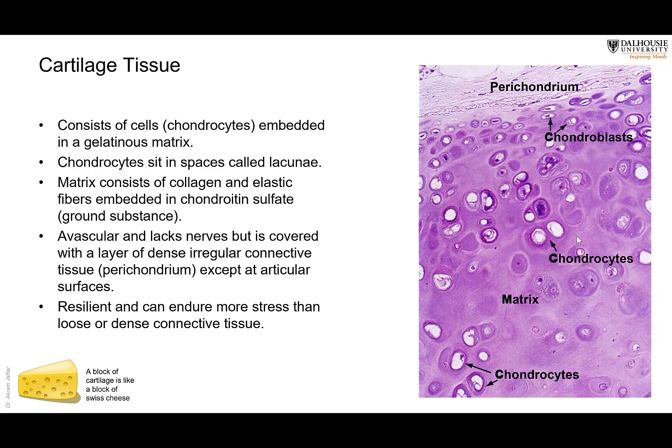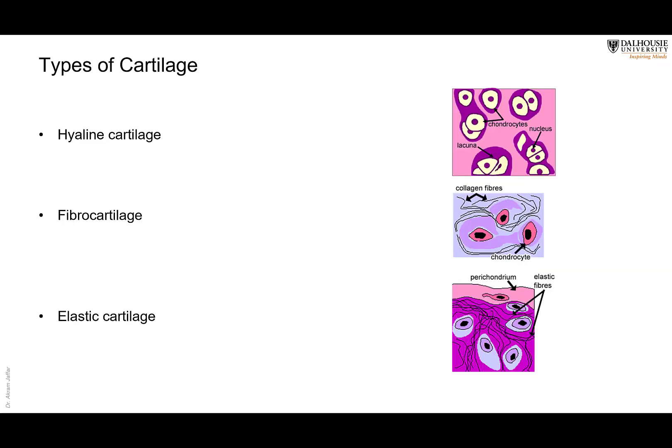The key difference between cartilage and connective tissue proper is that cartilage is avascular. While connective tissue is usually highly vascular, cartilage lacks blood vessels and nerves. Nerves and blood vessels are only present in a dense, irregular fibrous tissue that covers the cartilage, called the perichondrium — though not all cartilages are covered by it; for example, articular cartilages at the site of articulation are not. Because of this structure, cartilage is resilient and can endure more stress than loose or dense connective tissue. There are three types of cartilage: hyaline cartilage containing thin collagen fibers, fibrocartilage containing thick bundles of collagen fibers, and elastic cartilage containing predominantly elastic fibers.